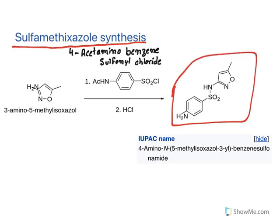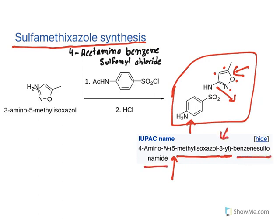The next drug is sulfamethoxazole. Its name is 4-amino (amino group at the fourth position) methyl isoxazole — the numbering starts at position one through five; at the fifth position a methyl group is present, making it methyl isoxazole, and the sulfonyl linkage is at the third position.